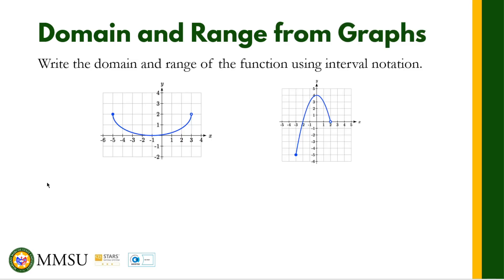Now let's try to determine the domain and range of a given function using its graph. Let us determine the domain and range of this first graph. This is a function because if we apply the vertical line test, we can say this is a function. So what are the possible values of X? Remember, the domain is the set of all possible values of X. So the domain of this function starts from negative 5.